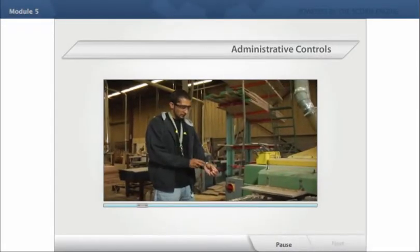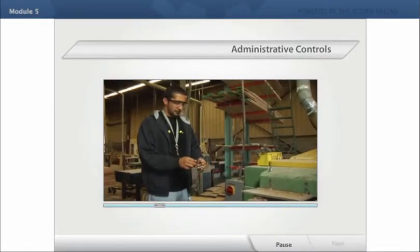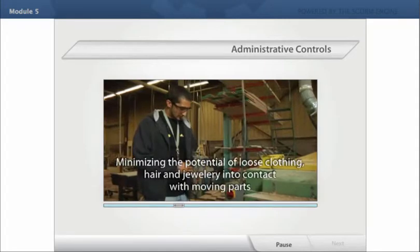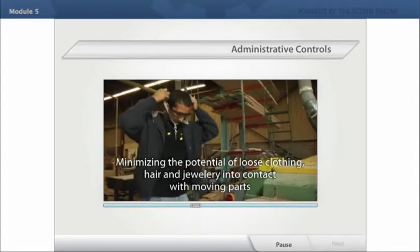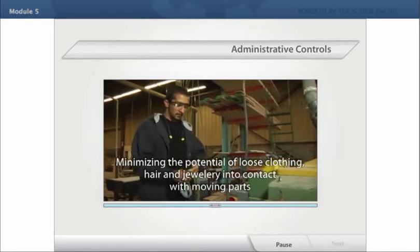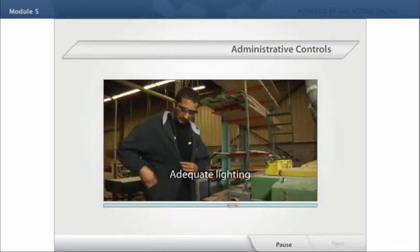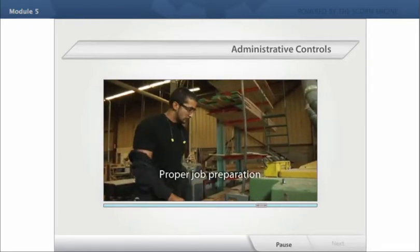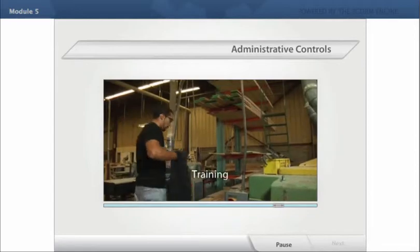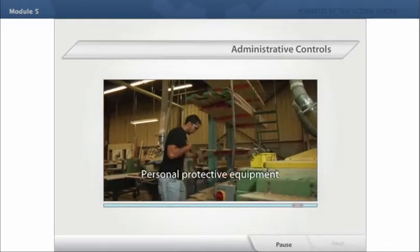Administrative controls include the following safe work practices and procedures: minimizing the potential of loose clothing, hair, and jewelry coming into contact with moving parts; adequate lighting; proper job preparation; training; and personal protective equipment.